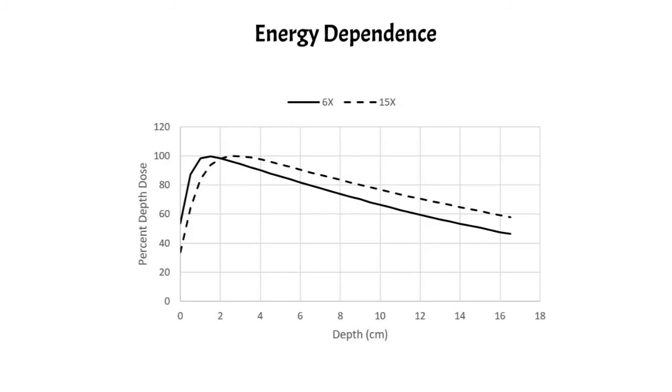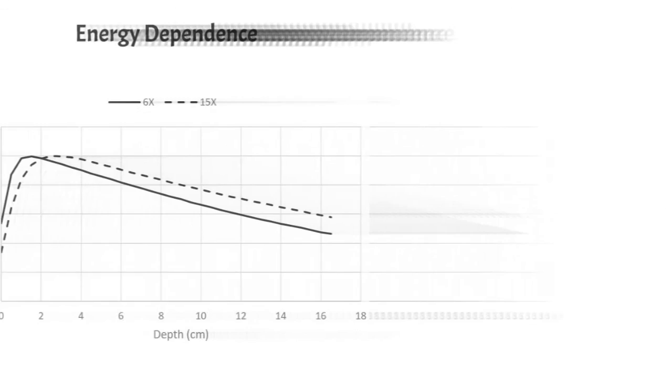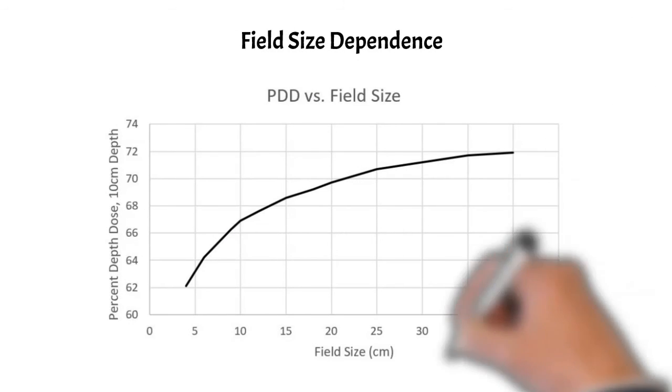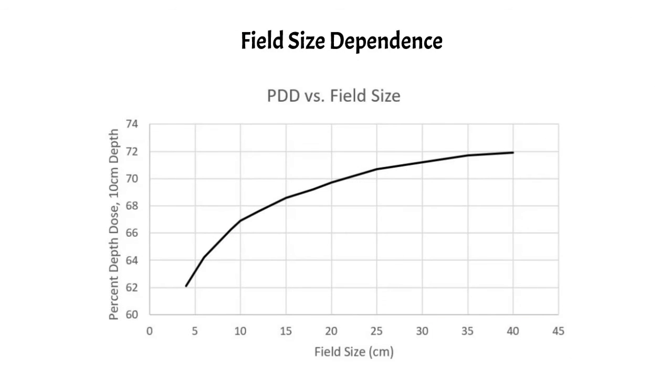Here's the field size dependence of the PDD. On the y-axis we have the percent depth dose at 10 centimeters and on the x-axis we have the field size. You can see that the PDD actually increases for increased field size up into these larger field sizes. It kind of starts to flatten out but generally it tends to increase.